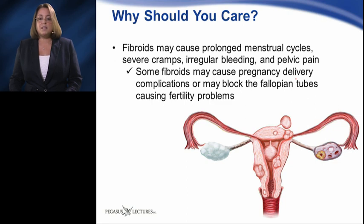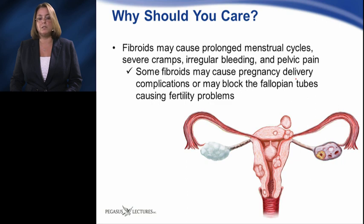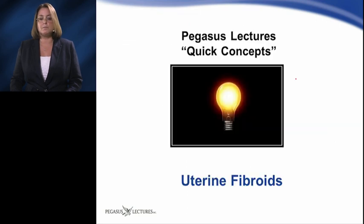Fibroids that are large and low in the uterus may cause complications during delivery when a woman is pregnant. If a fibroid is blocking the fallopian tubes, it may cause fertility problems. This Pegasus Lecture's quick concept was on uterine fibroids.